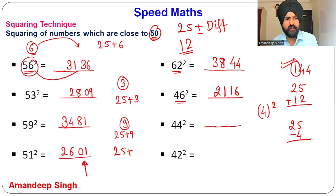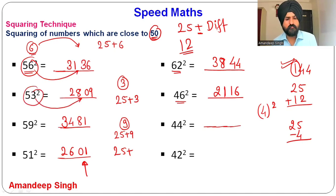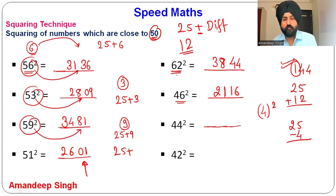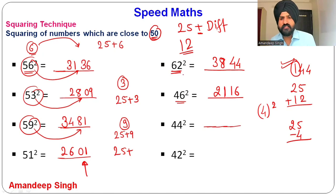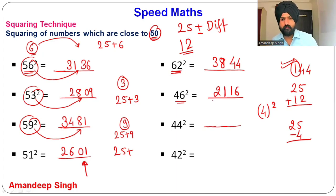Just note: for numbers in the range of 50s, the right-hand part is the square of the last digit. But for 62, we are actually measuring the number from 50 — the difference is 12, not just the last digit. So always be careful and measure the difference from 50.